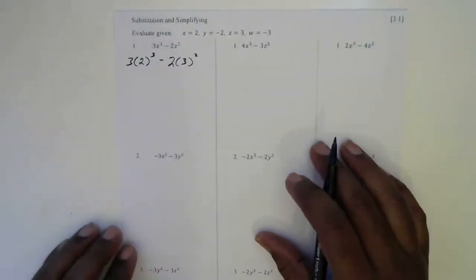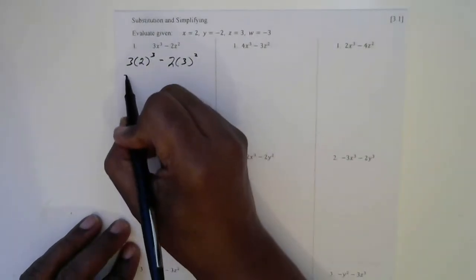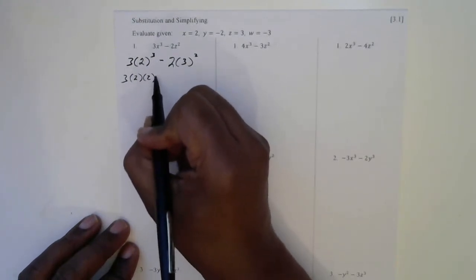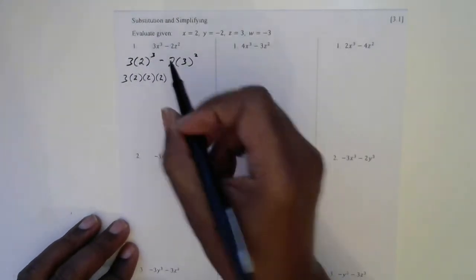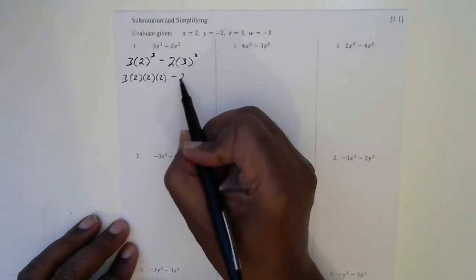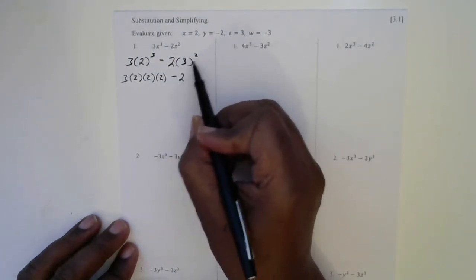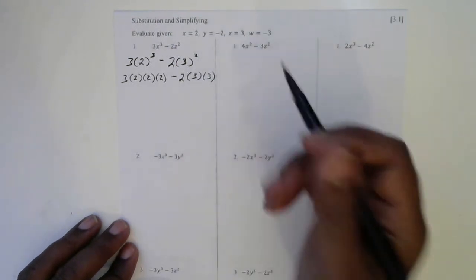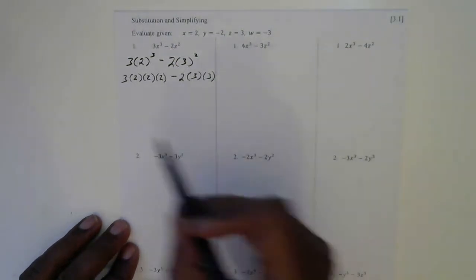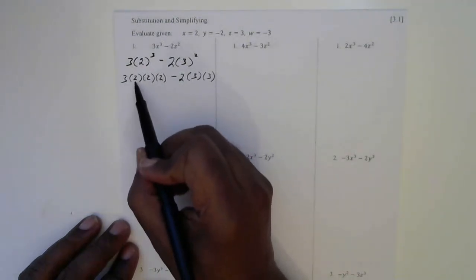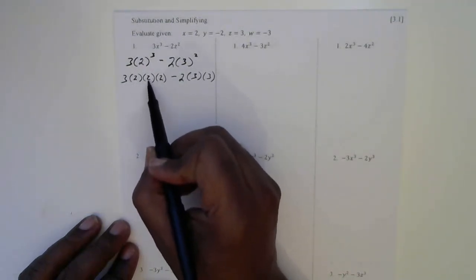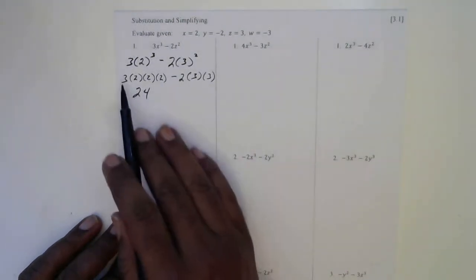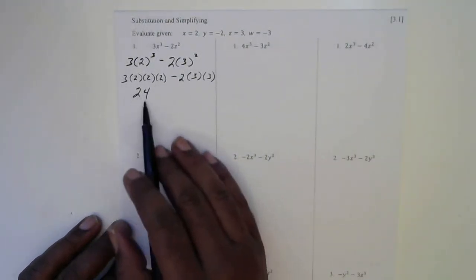Now we're going to use expansion. So this will be three, and this 2 is going to be written three times: two parenthesis, two parenthesis, two. Then a minus two here, and then this 3 is going to be written two times: three parenthesis, three. Now it's time for multiplication. Three times two is six, six times two is 12, and 12 times two is 24. So that would be 24, and there are no negatives here, so this is a positive 24.